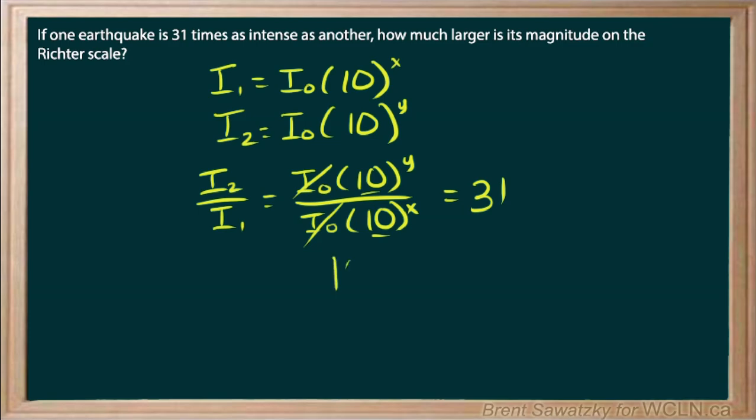So we could say that 10 to the Y minus X, just subtracting the exponents, is 31. So, not bad. And so we're looking for the exponents. And we're stuck here in our old way of life.